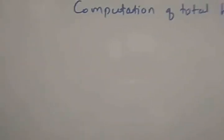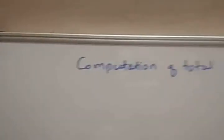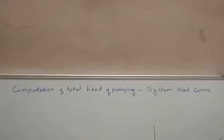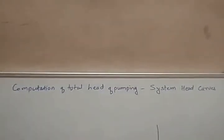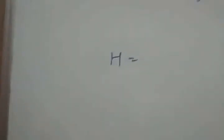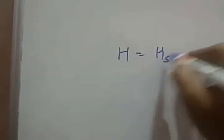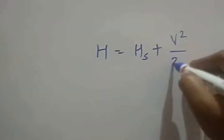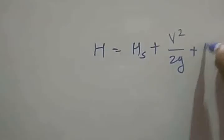Hello friends, today in this lecture we will see the computation of total head of pumping, also known as the system head curve. The total head of pumping is given by H = HS + V²/2G + HL.